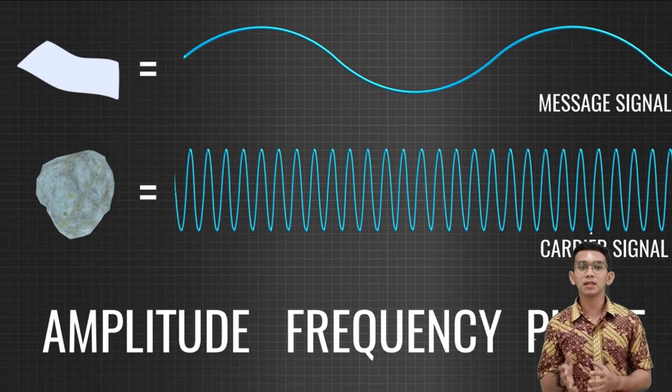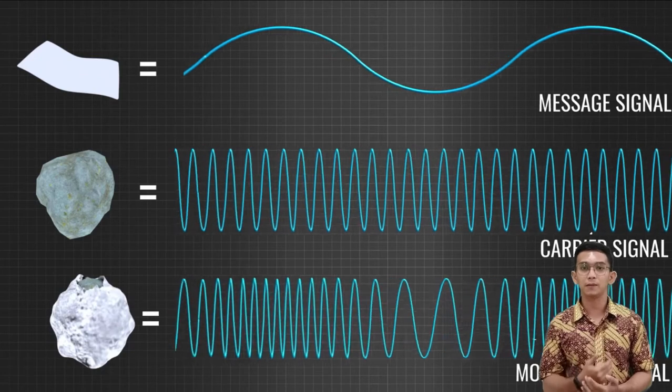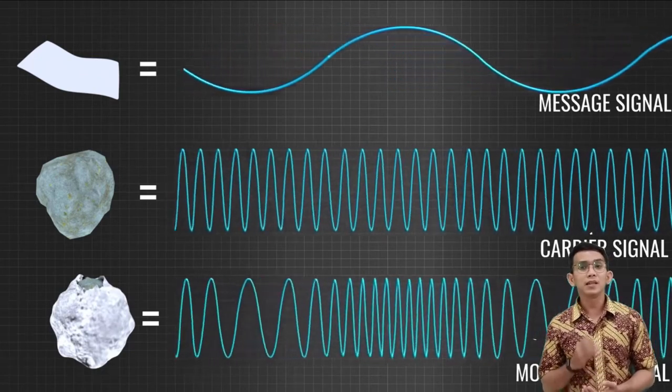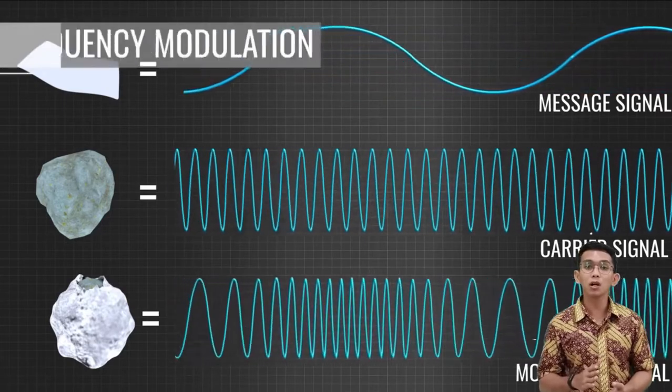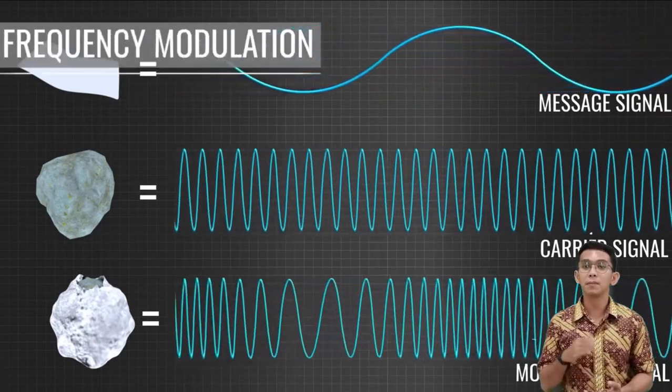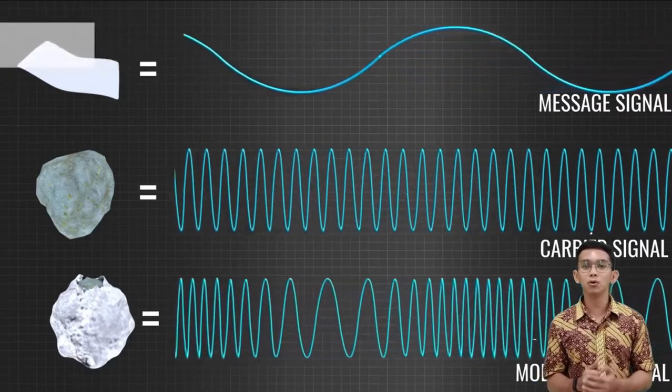In the modulation process, one of the properties of the carrier signal is varied in accordance with the message signal. For example, the frequency of the carrier signal is varied according to the amplitude of the message signal. This technique is known as frequency modulation.